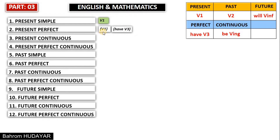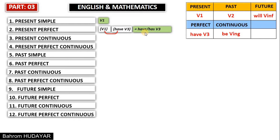So this is the present formula — verb one — and the perfect formula has verb three. I have written the formulas based on the names of the tenses: present and perfect. Now I will show you multiplication. Multiply verb one with have — the first form of have, which is have or has. As a result of this multiplication process, you will get the main formula of present perfect, which is have/has + verb three. This is the main formula of present perfect tense.